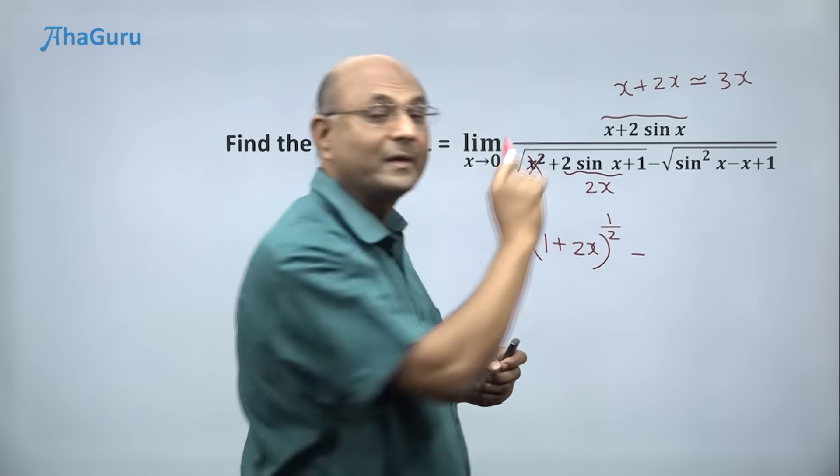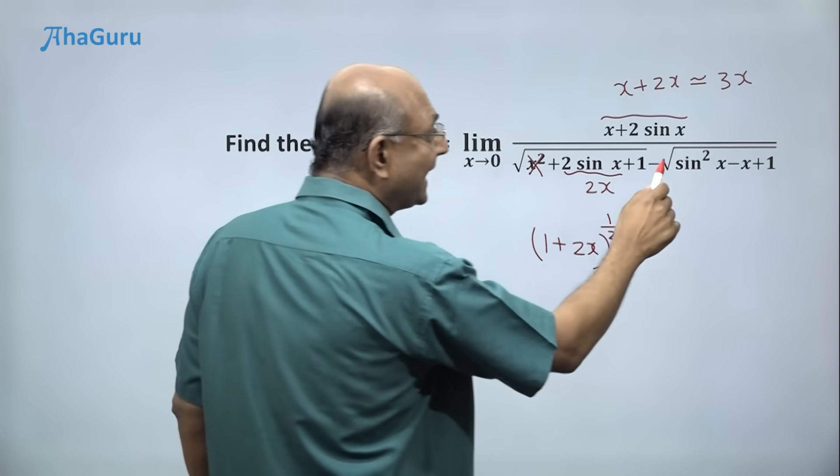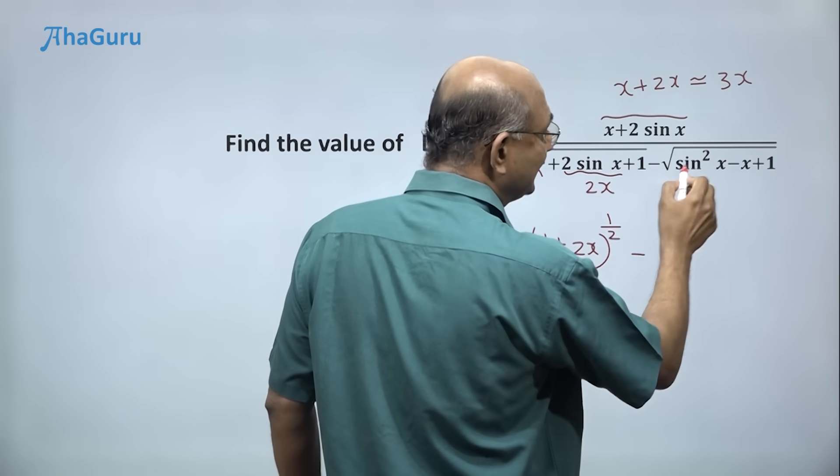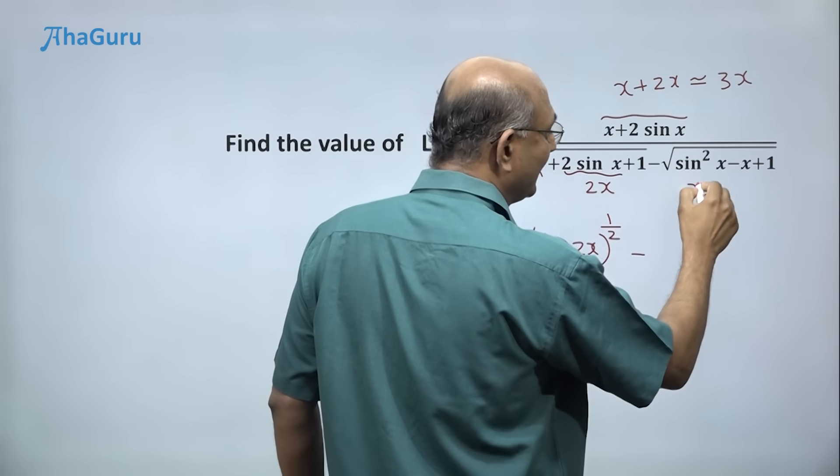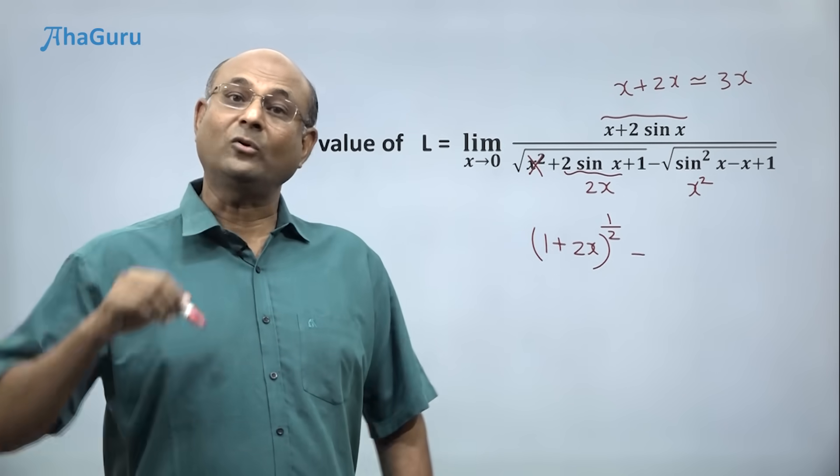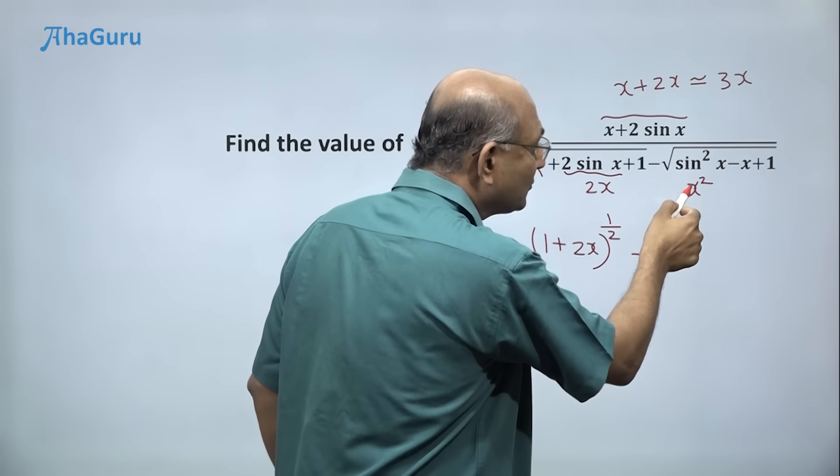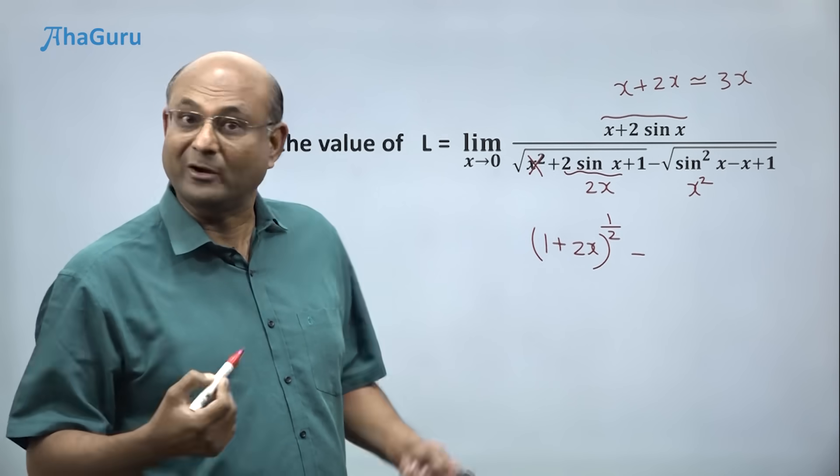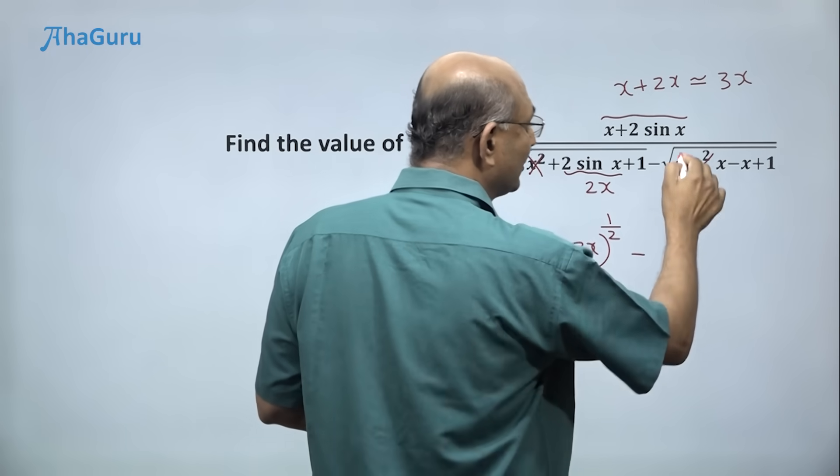Now let us focus on this side. What do I have there? I have sin square x, which is the same as saying sin x whole square. Sin x is approximately x, so sin square x must be equal to x square. But if you look at this, x square is very trivial compared to x, we have already seen that. So I can ignore this.